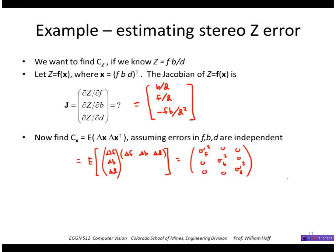So then if we know those, then we can go ahead and calculate the covariance matrix of Cz by this matrix multiplication here. And remember that j has to be evaluated at the current value of x.